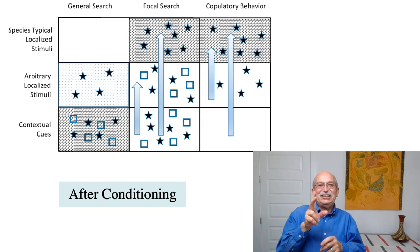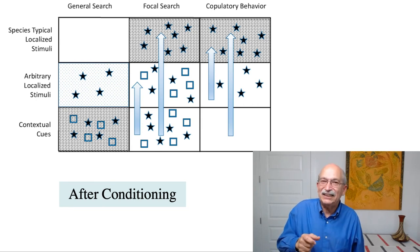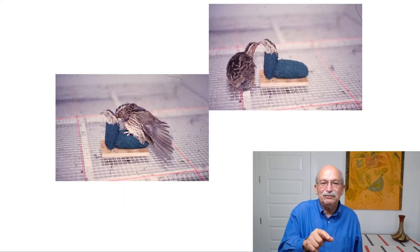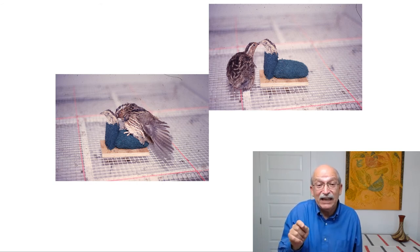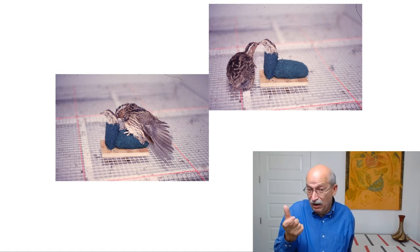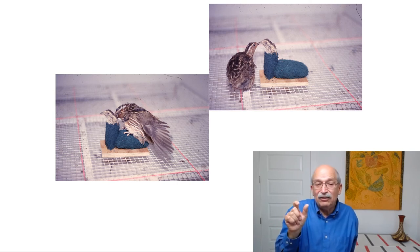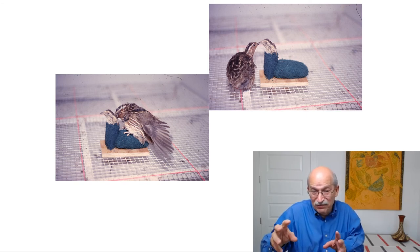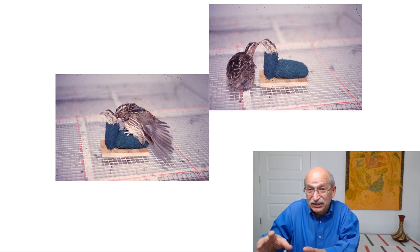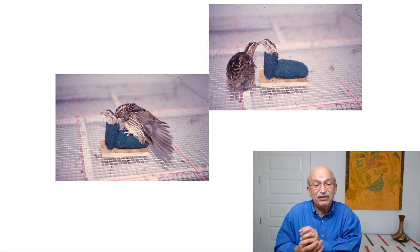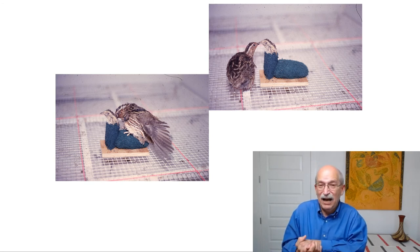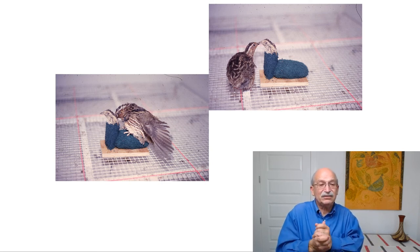To show you what some of these conditioning effects are — particularly those involving limited species-typical cues — the photograph shows approach behavior to an object that has a taxidermically prepared female head: very limited female cues. Ordinarily these cues are not enough to generate an approach response, but if an object like this is used as a conditioned stimulus paired with copulatory reinforcement, those cues are going to elicit approach behavior and actually elicit copulatory behavior. The figure on the left shows a male quail copulating with this object — a kind of variation of a sexual fetish response.